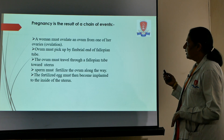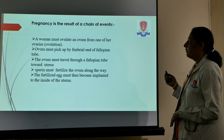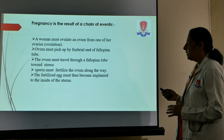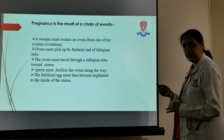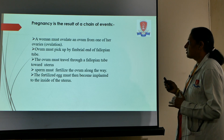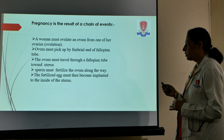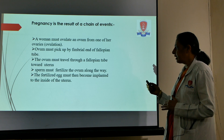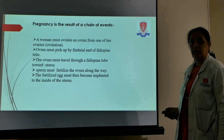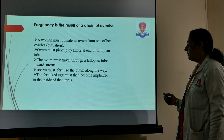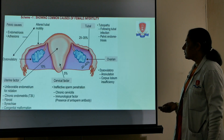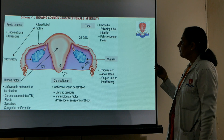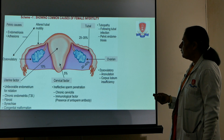Pregnancy is the result of a chain of events. A woman must first ovulate and release an ovum from one of her ovaries. The ovum pickup occurs from the fimbriated end of the fallopian tube, and then the ovum must travel through the fallopian tube towards the uterus. The sperm must fertilize the ovum along the way, and the fertilized egg must then become implanted inside the uterus.